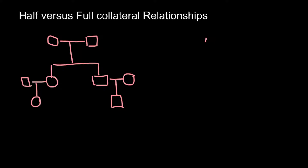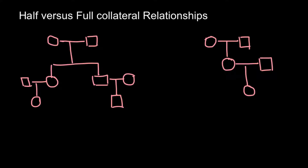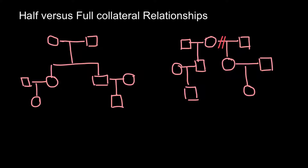Now let's look at a different situation. We have a female who marries a man, they have a child, that child marries another man and has their own child. But also this female may break her marriage and marry another male, having another child, who would grow, marry a female, and have a child of their own. So what would be the coefficient of relatedness in each of these families?